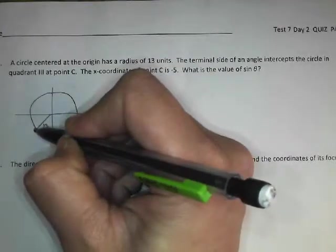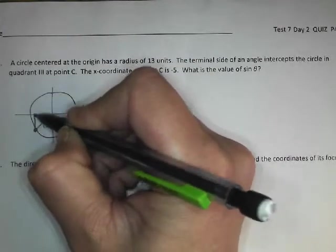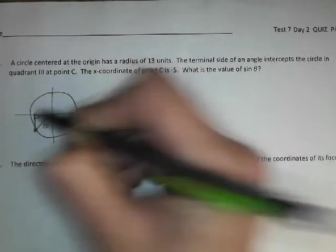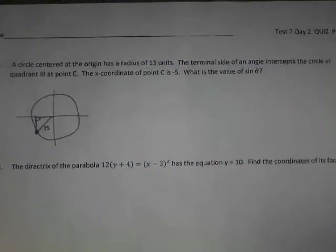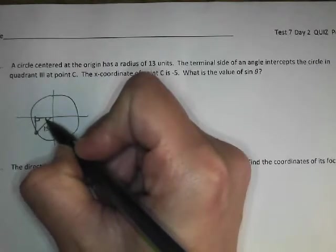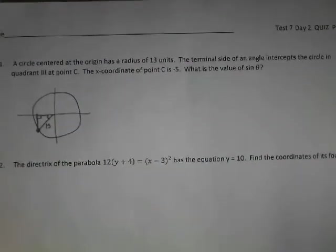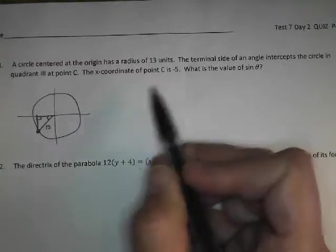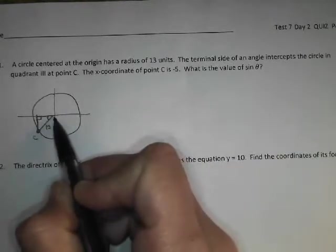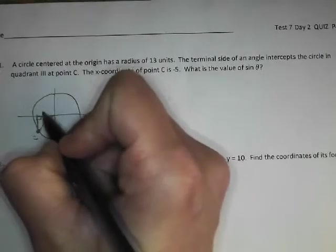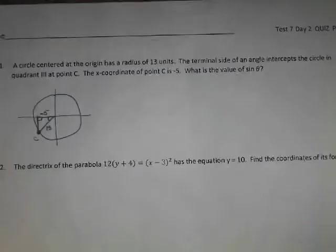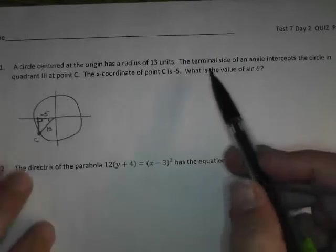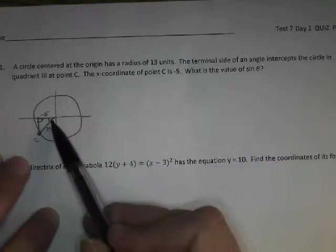And then you always drop your triangle, your right triangle, to the x-axis, so there we have our right triangle. Our angle is always this angle created near the origin. The x-coordinate at point C is negative 5, so if the x-coordinate is negative 5, that means I came this way, negative 5. So then from here, if I want to know the value of the sine of theta, here's my angle.